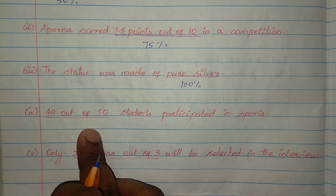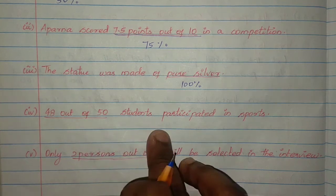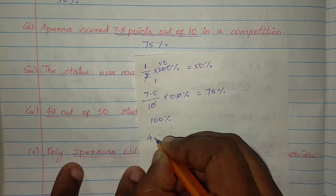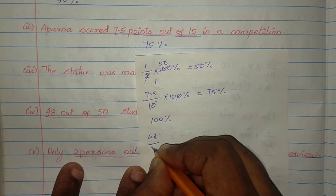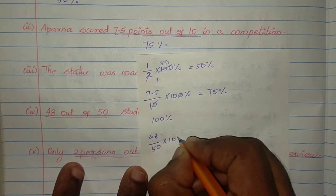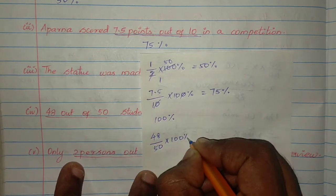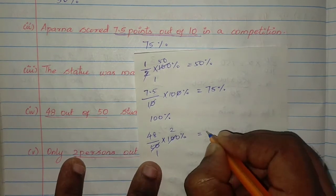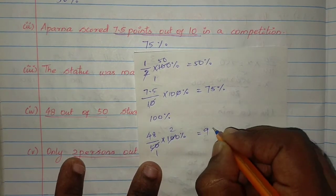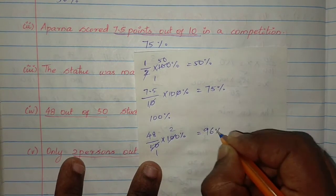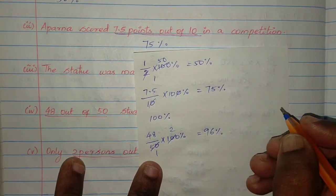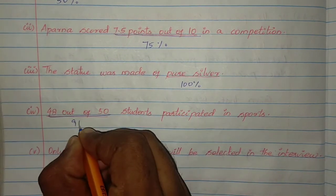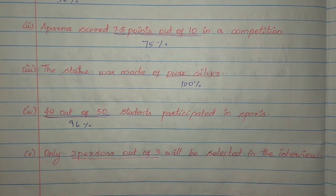48 out of 50 students participated in sports. So 48 by 50 into 100%: 2 times equals 96 times. Therefore 96% of the students participated in sports.